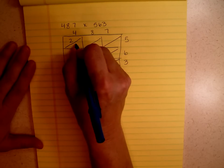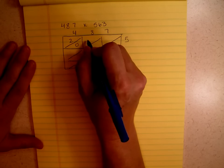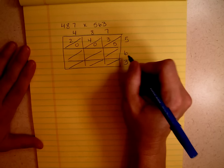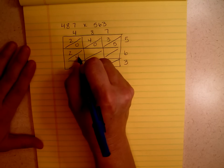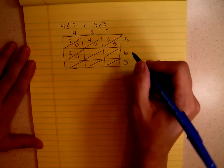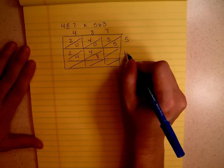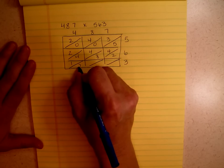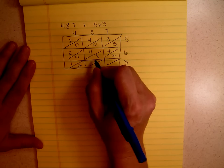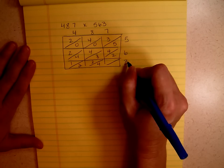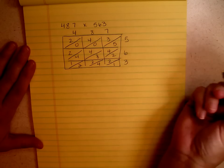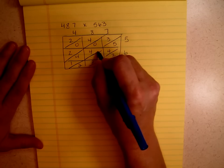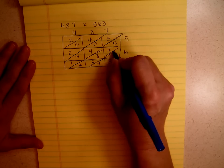4 times 5 is 20. 5 times 8 is 40. 5 times 7 is 35. 6 times 4 is 24. 6 times 8 is 48. 6 times 7 is 42. 4 times 3 is 12. 3 times 8 is 24. And 3 times 7 is 21. So now I'm done. All I'm going to do is kind of connect these lines. Help me out a little bit.